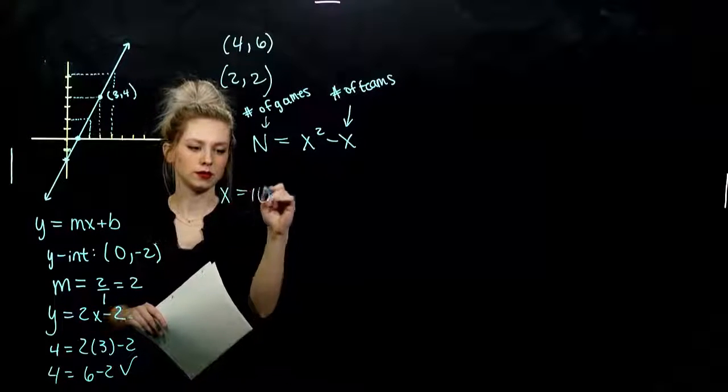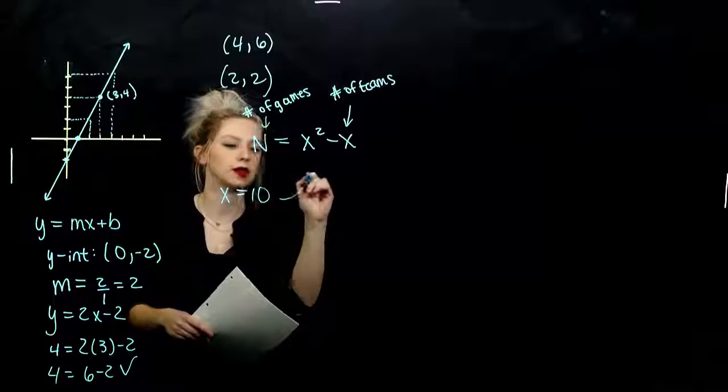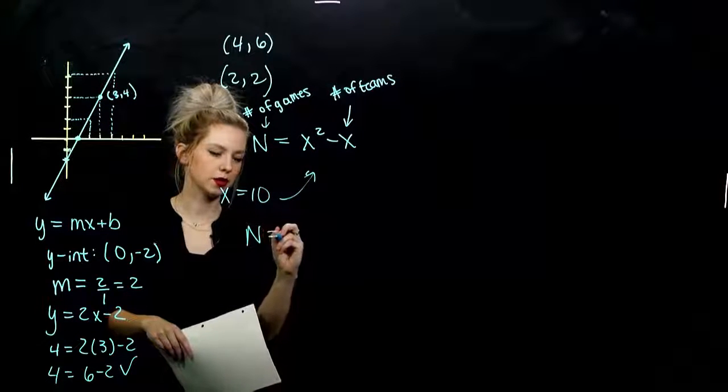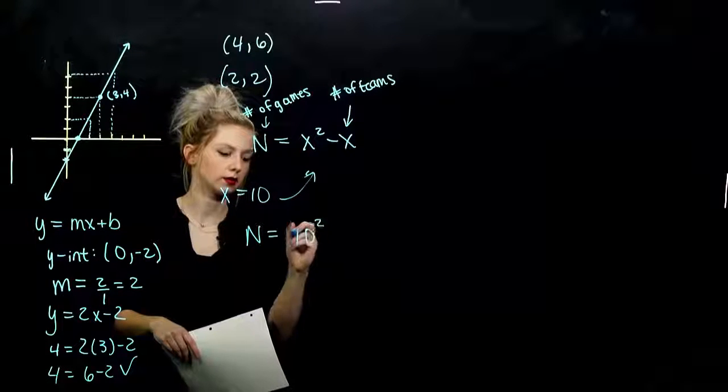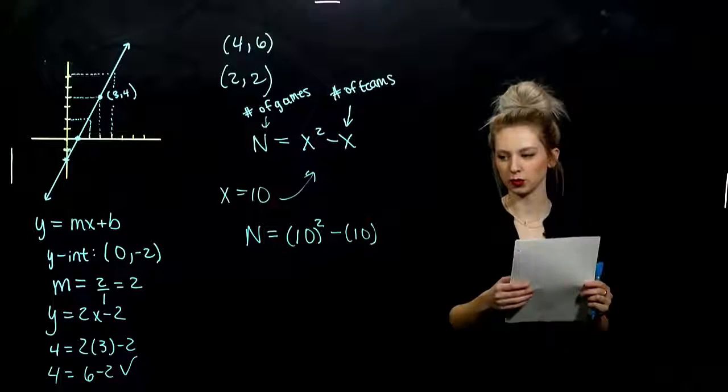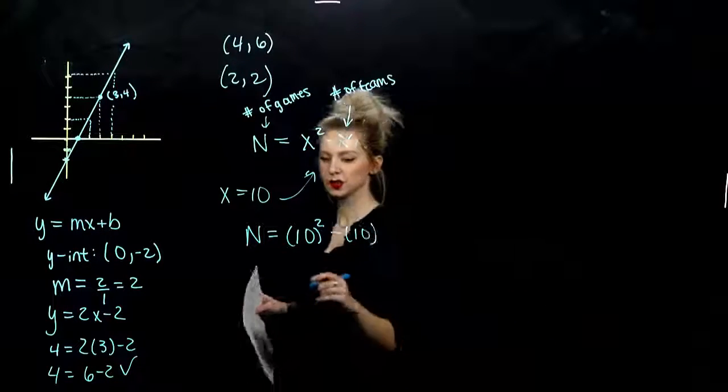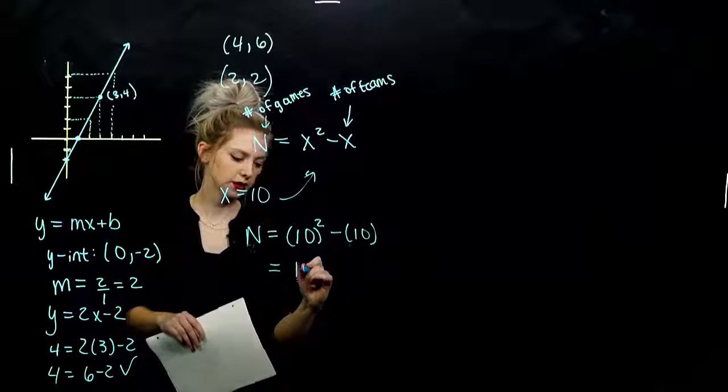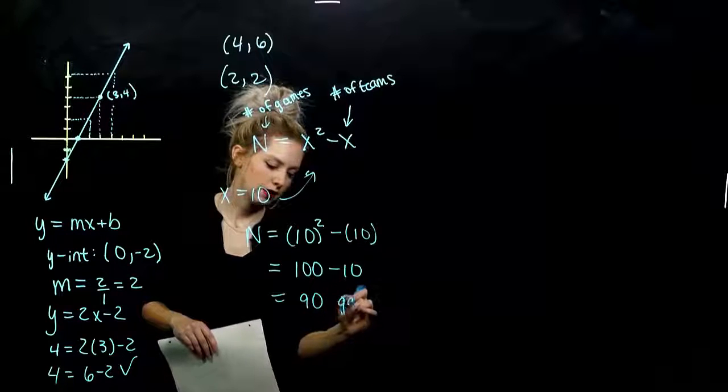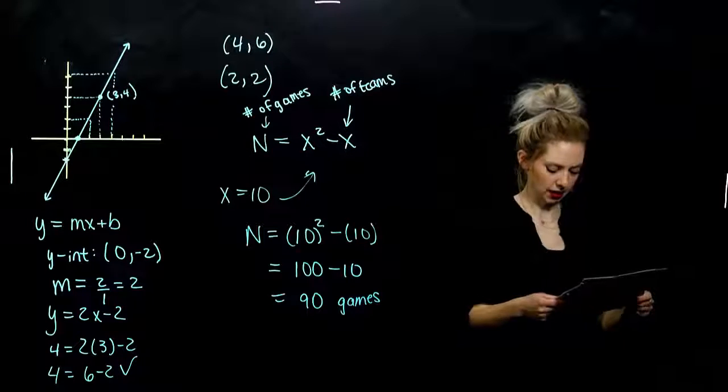I know that x is equal to 10. So, if I plug that into my equation, trying to figure out the number of games. n is going to be equal to 10 squared minus 10. It's helpful. If ever you see an x, put parentheses around it so you don't make mistakes. So what are you looking at? 10 times 10 is 100. We're subtracting off 10. So I've got 90. And we can put units on there. 90 games they're going to have to play.